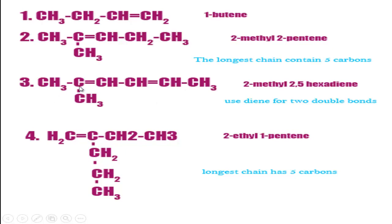Another example: a compound with two double bonds. The longest chain has six carbons with double bonds at positions two and four, and a methyl group at carbon two. Its name is 2-methyl hex-2,4-diene — 'diene' because there are two double bonds.